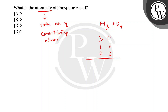So what happens? 3 plus 1 is 4, plus 4 is 8. Option B — 8 is the atomicity of phosphoric acid. I hope you understand. Thank you so much.